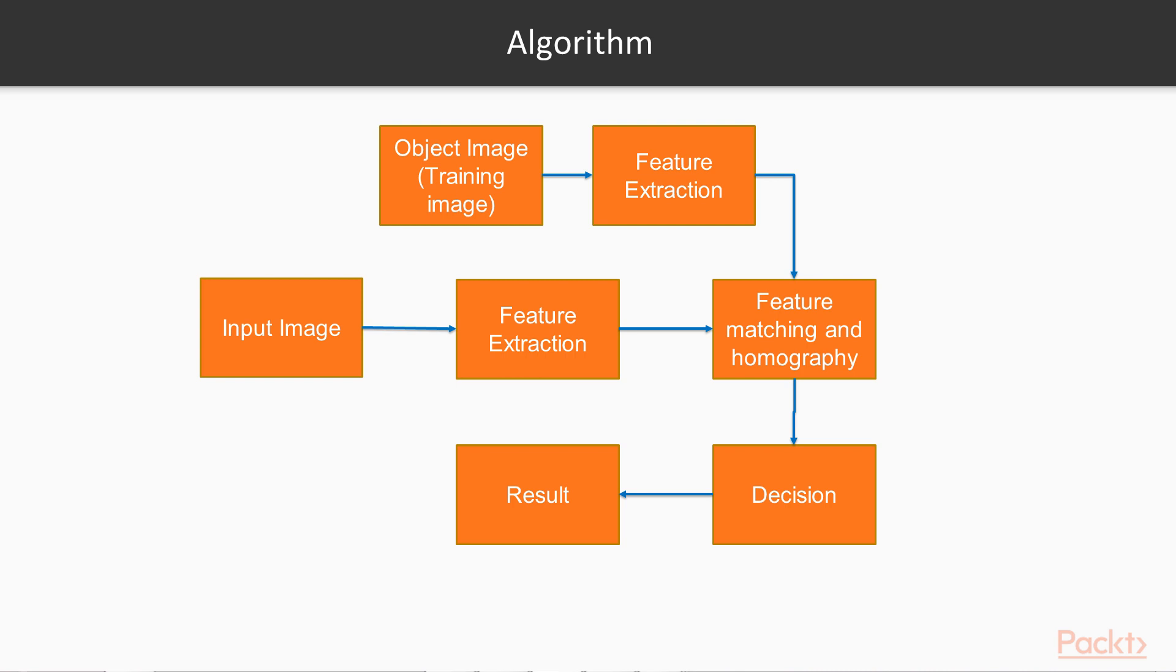Further, we match the features and its descriptors in these two images. Now if the matched features are more, then the object is present, and if not, the object isn't there. Thus we take a decision based on the threshold matches and obtain the result.